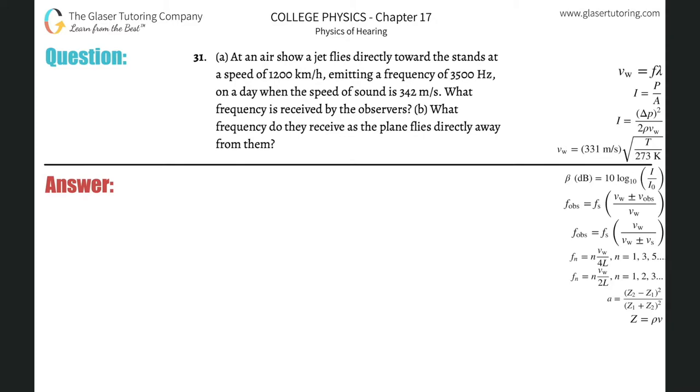Number 31, letter A: At an air show, a jet flies directly toward the stands at a speed of 1200 kilometers per hour, emitting a frequency of 3500 hertz. On a day when the speed of sound is 342 meters per second, what is the frequency received by the observers?